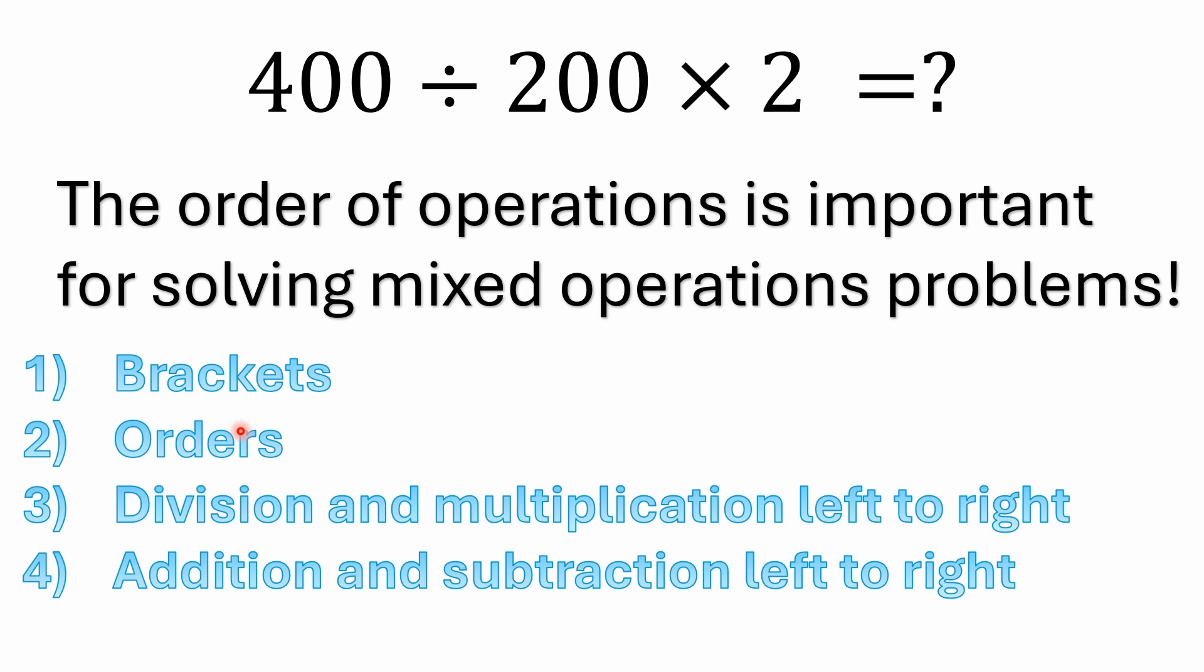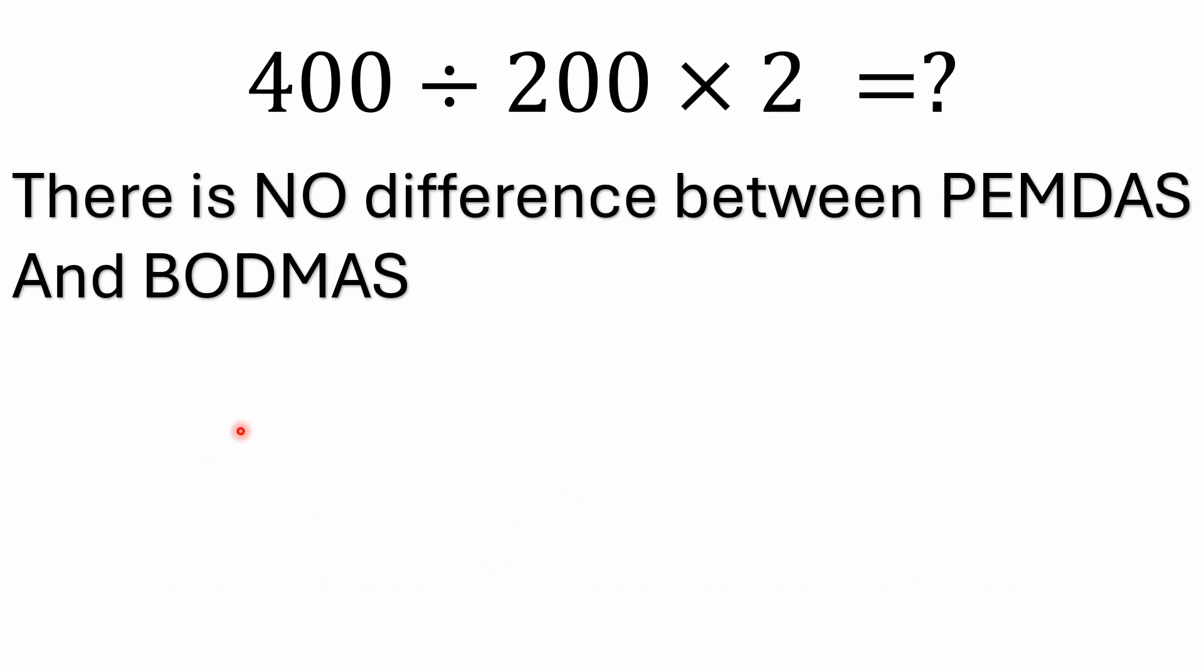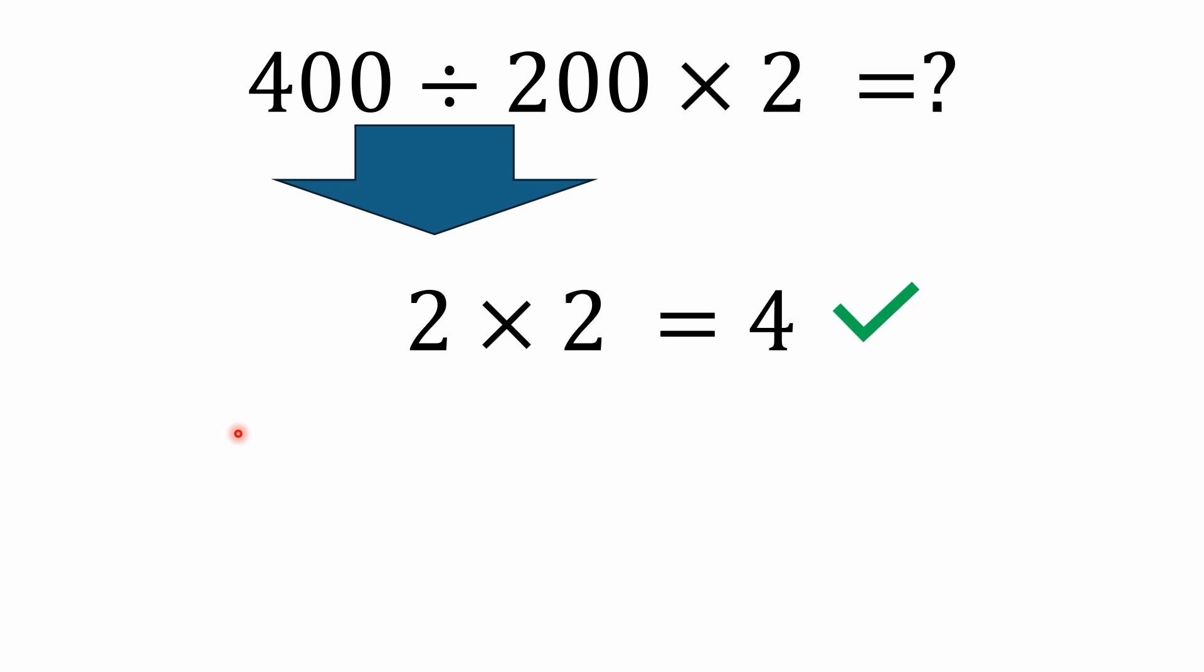But that gets lost on a lot of people who just memorize an acronym, and I see it all the time. And again, there's no difference between PEMDAS and BODMAS. There's also BIDMAS and BEDMAS. There's some variations on the acronyms, but again, those all mean the same thing. Here, like I said, we would do the division first because we encounter that first going left to right. 400 divided by 200 is 2. 2 times 2 is 4.